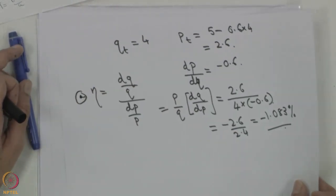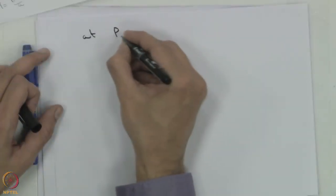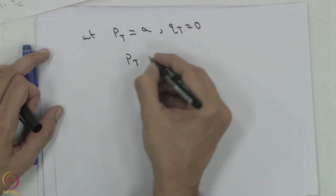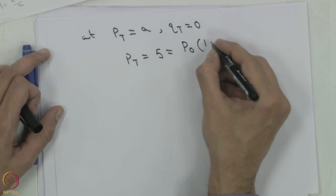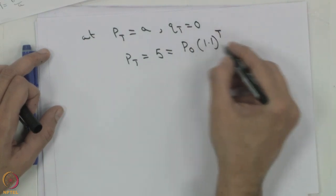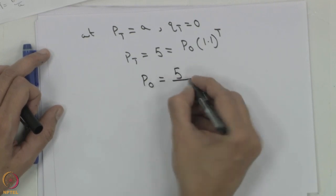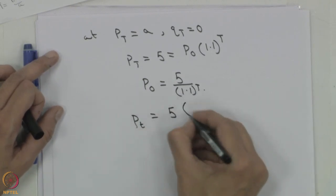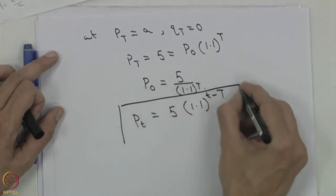Then determine the time path of extraction for a mining industry under pure competition. We have derived this in the module. At Pt equal to A, Qt is equal to 0. So Pt equals 5, which is P0 times (1 plus d) raised to t, that is 1.1 raised to t, where T is the time when the reserve gets exhausted. So P0 will be 5 divided by 1.1 raised to t, and Pt is 5 times 1.1 raised to (T minus t).